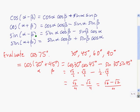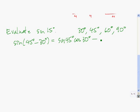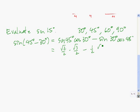Minus sine of the second times cosine of the first — so minus sine of 30 degrees times cosine of 45 degrees. The sine of 45 degrees is √2/2. Cosine of 30 degrees is √3/2. Sine of 30 degrees is 1/2. Cosine of 45 degrees is √2/2. So here we get √6/4 minus √2/4, and this is equal to (√6 − √2) / 4.